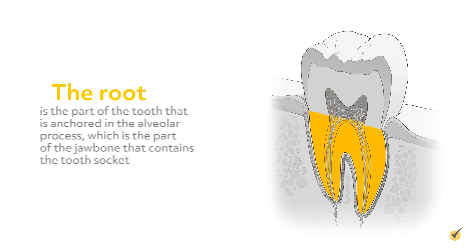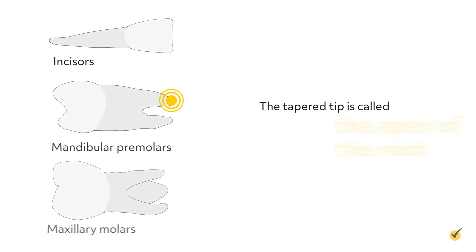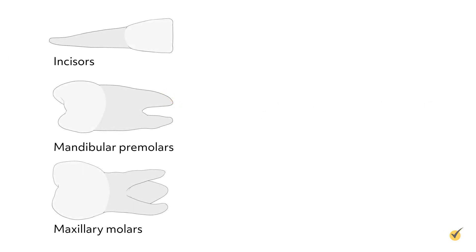The root is the part of the tooth that is anchored in the alveolar process, which is the part of the jawbone that contains the tooth socket. The tapered tip is called the apex of the root.